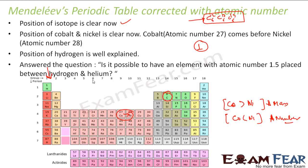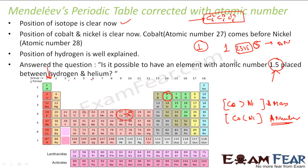Also, answer this question: is it possible to have an element of atomic number 1.5 between hydrogen and helium? We can say no. Why? Because atomic number is a natural number, so we cannot have 1.5 as a natural number. With that, we can also say that if elements have atomic numbers between 1 and 6, there are exactly 4 elements — 2, 3, 4, 5. But if talking about atomic mass like 1.2 and 5.8, you don't know how many elements can be between them because they are decimal numbers.